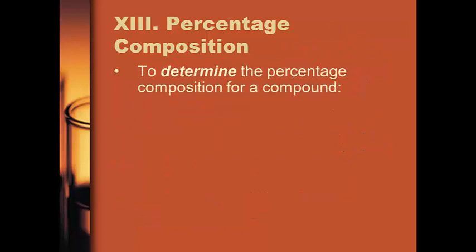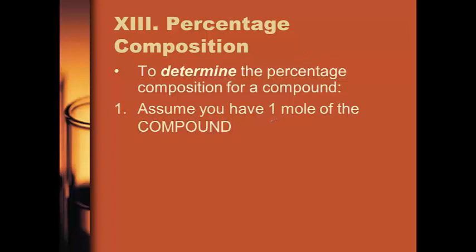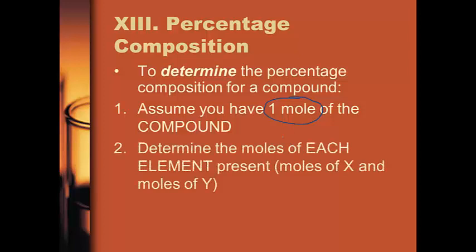How do you figure out the percentage composition for a compound? You do not have to be given any masses. Because the percentage doesn't change regardless of how much you pick, you get to pick as much as you want. So pick one mole of the compound. Since you have one mole of the compound, figure out how many moles of each element is present. If you took one mole of XₐYᵦ, that means you must have 'a' moles of X and 'b' moles of Y present.